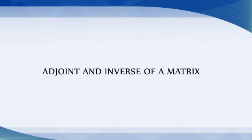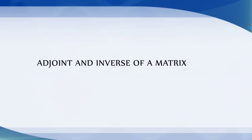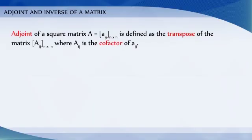Adjoint and inverse of a matrix. The adjoint of a square matrix A = [aij]n×n is defined as the transpose of the matrix [Aij]n×n, where Aij is the cofactor of aij.